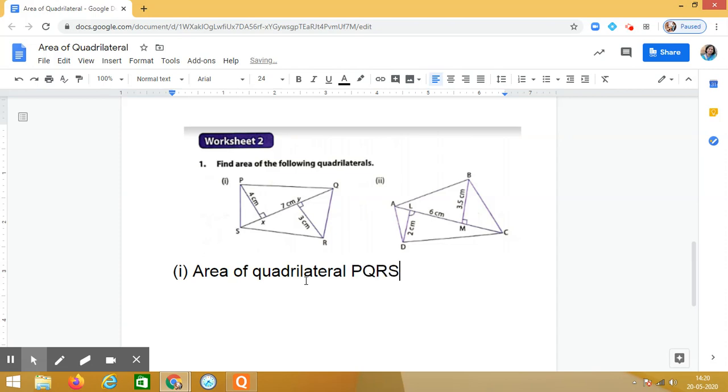PQRS. Now you tell me what will be the area of quadrilateral PQRS? Yes, you are right. It will be equal to sum of areas of two triangles. So area of triangle PSQ plus area of triangle RSQ.